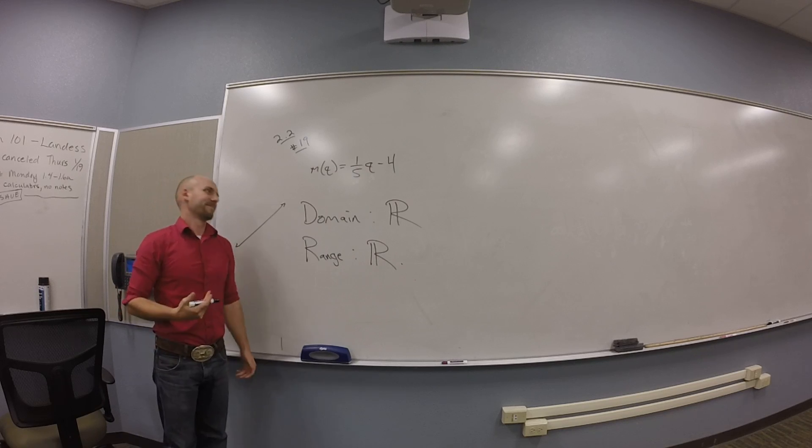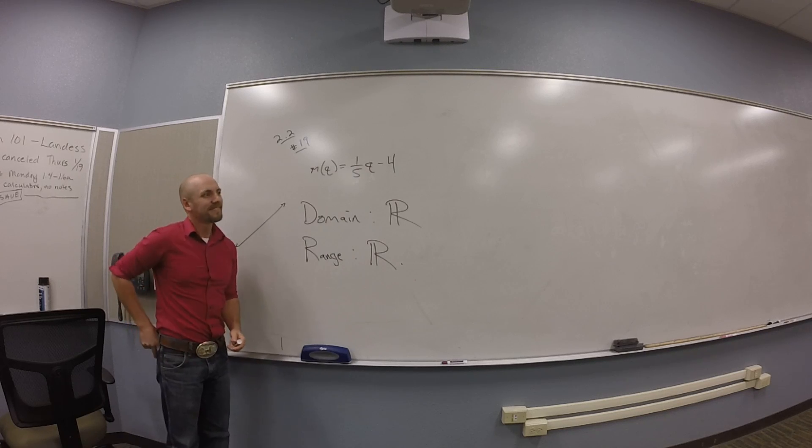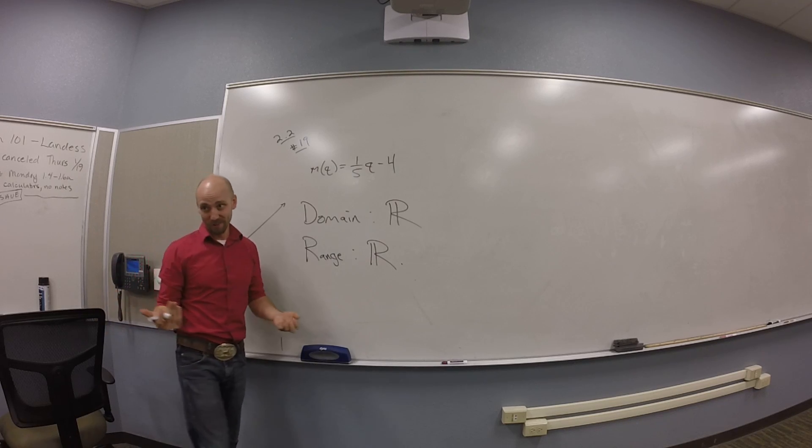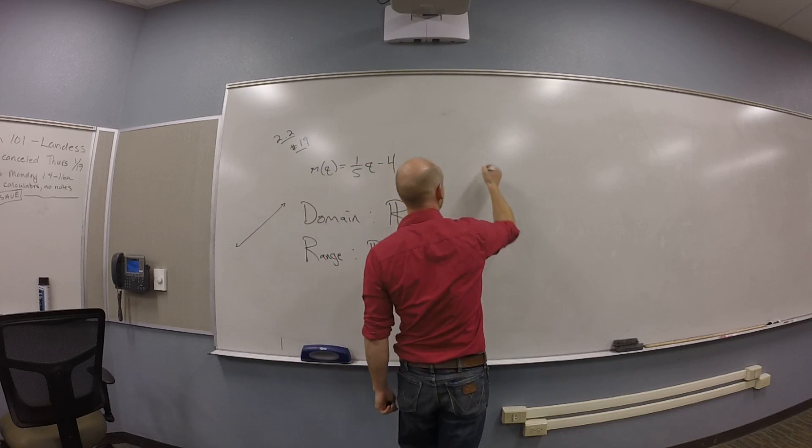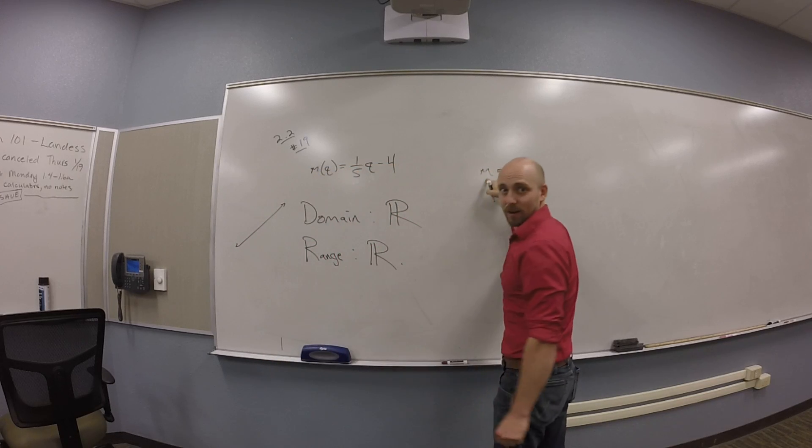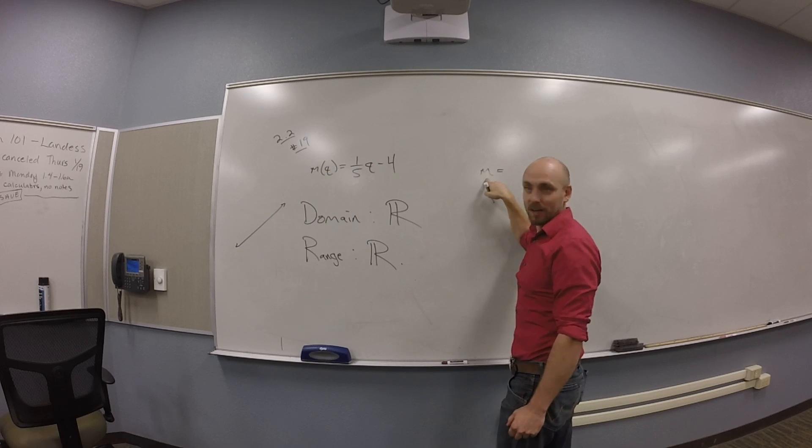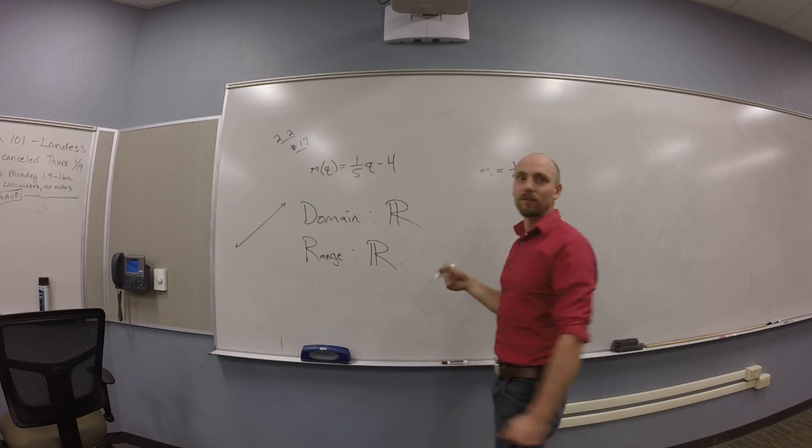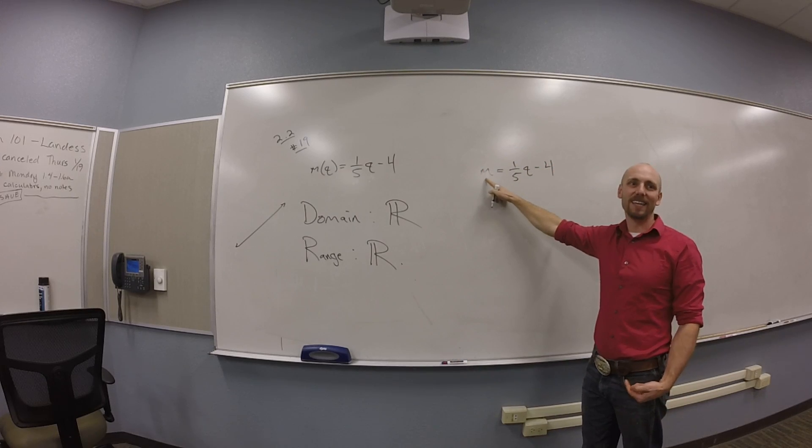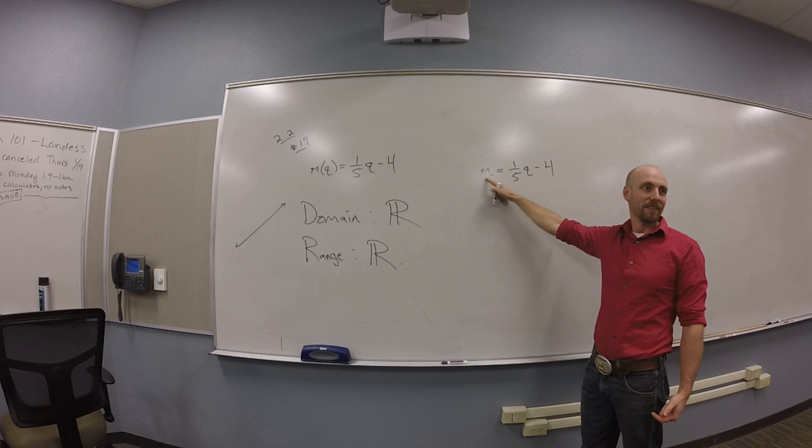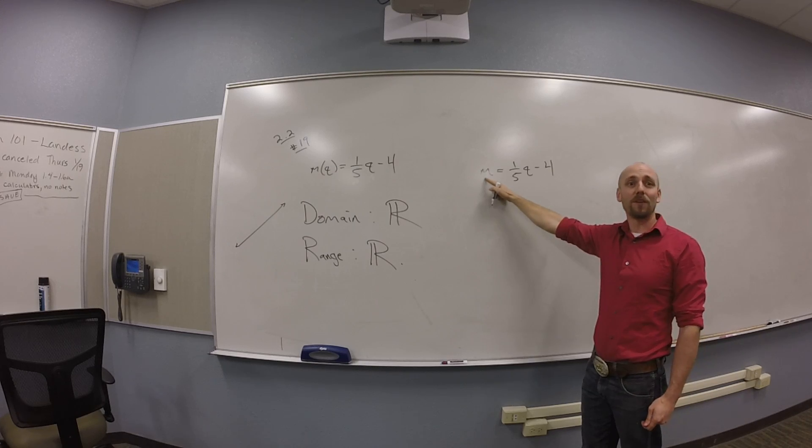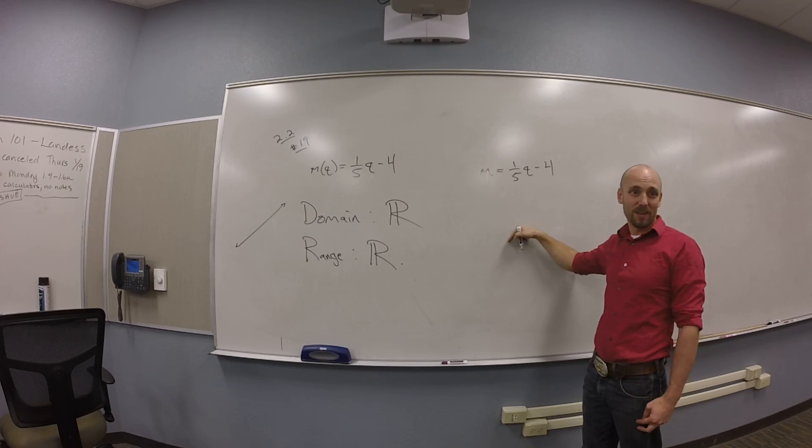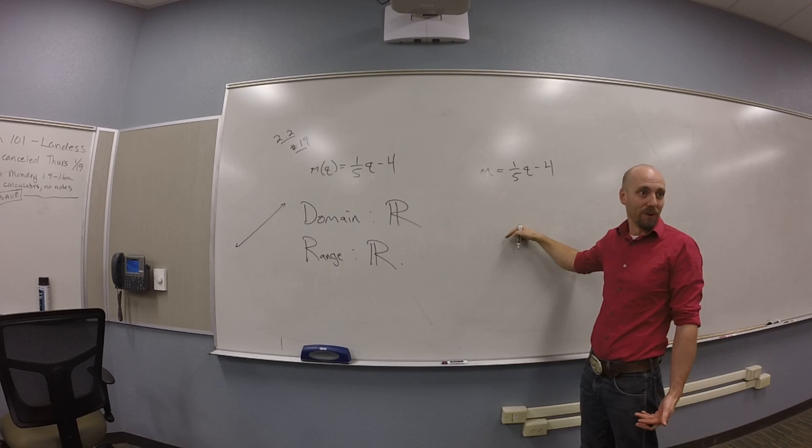Is that algebraically or is that just kind of like thinking? It's a good question. So here's a more algebraic approach. What if we did, say I had an output. I'm just going to call that output m for kicks. That output's 1/5 q minus 4, right? And so now I'm wondering, are there any m's I can't get out of this thing? So one way to figure out if I can't get m out is to try to solve for q and just see if there are any problems that arise.